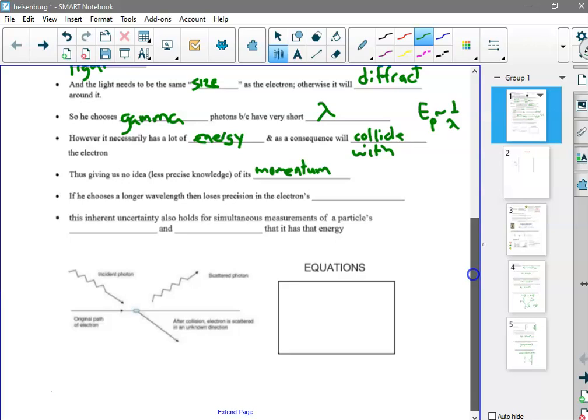It's not obvious which way it's going to go based on a collision. So if we don't want to affect the electron's momentum by observing it, we can choose a longer wavelength. In other words, it packs less energy. However, if we choose a longer wavelength, then we lose precision in the electron's position because there's going to be more diffraction. And there's really no way around it.